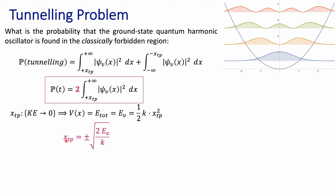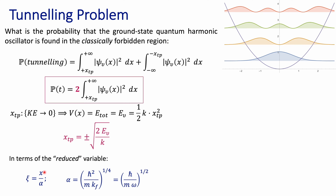Solving for that, we find that the magnitude of the turning point can be calculated on the x-axis as the square root of 2 times the energy of your vibrational level divided by the force constant, plus or minus because you have this symmetric type of problem. In terms of the reduced variable chi, recall that chi is related to the vibrational axis x through alpha. Alpha contains the parameters that define your oscillator, so we can express the turning points in the reduced coordinate.